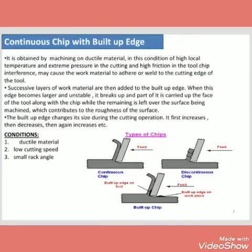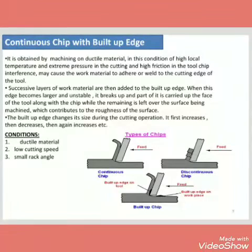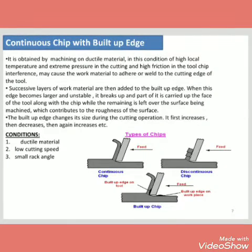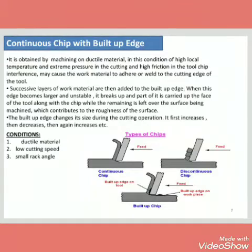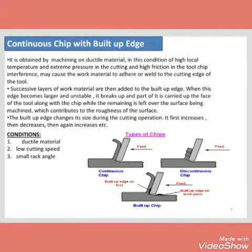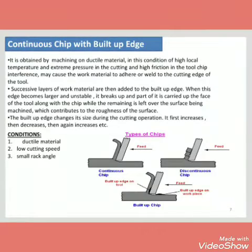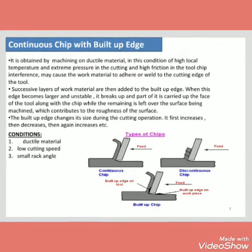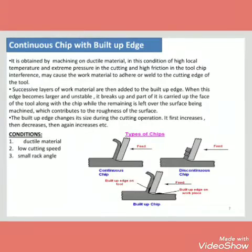Next is continuous chip with built-up edge. The built-up edge is obtained by machining on ductile material under conditions of high local temperature and extreme pressure in the cutting zone. High friction at the tool-chip interface may cause the work material to adhere or weld to the cutting edge of the tool. The built-up edge changes during the cutting operation — it first increases, then decreases, then again increases. The conditions for this are ductile material, low cutting speed, and small rake angle.